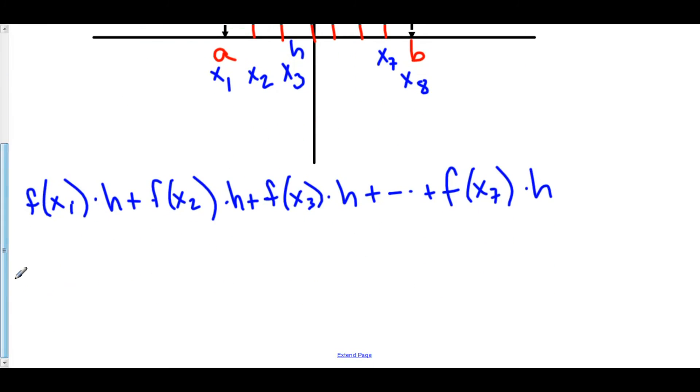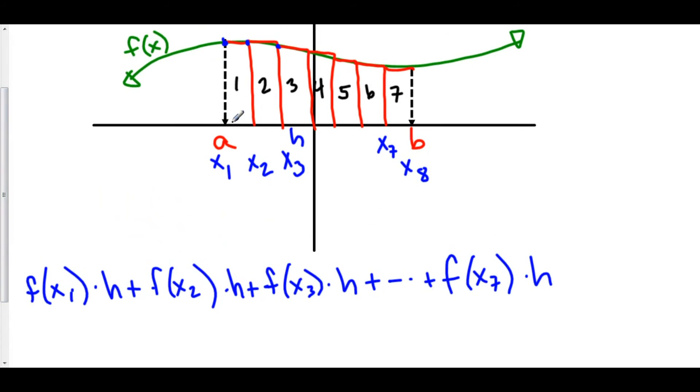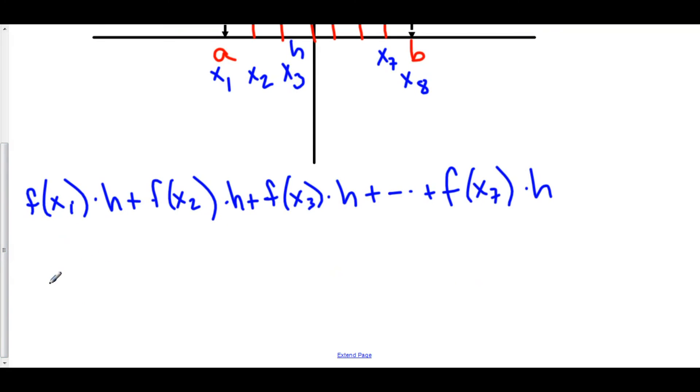Really cool thing, though, is that we could factor out an h right now because each of these different h's is the same. And you can only do this, you can only factor it out if you have the same h all the way through. Luckily, when we do a Riemann sum, our h tends to be the same all the way through. So we could factor out an h and we're left with f of x sub 1 plus f of x sub 2 plus f of x sub 3 plus all the way up through f of x sub 7.